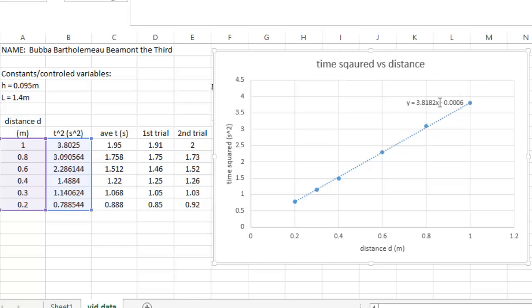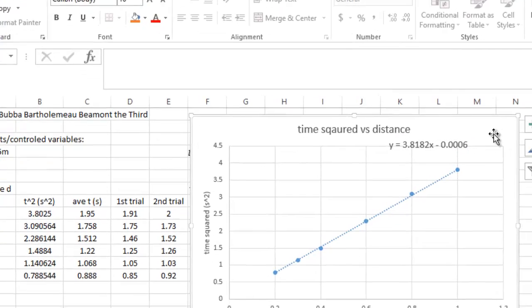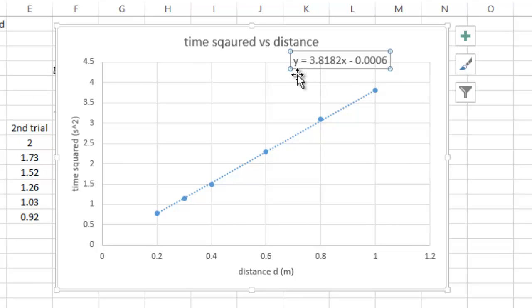Now the last thing we do to make our graph all ready to roll and print is we need to change this little equation here. You can increase the font size like you do everything else, that's easy, but we don't want to leave the y and the x. We want to replace the y and the x with the two variables on our graph. Now on the y axis, we have time squared. So we want to replace the y with t squared, and that's how you type in squared. And we're going to replace the x with a d.